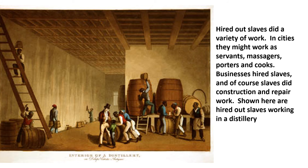In towns, hired-out slaves might work temporarily as servants, messengers, porters, or cooks. A canal company might get them to do digging. Like slave trading, the practice of hiring out flourished and the price of rent went up as the years passed. Throughout the antebellum age, the price had often grown to $500 or $600 per year, with the highest prices at the end of the antebellum age in Texas.